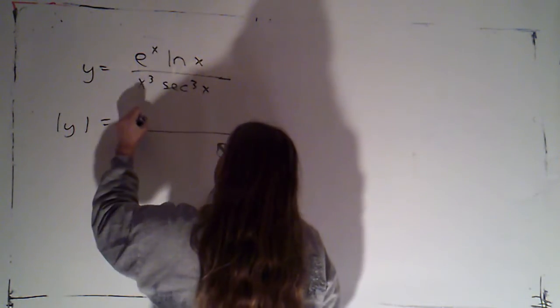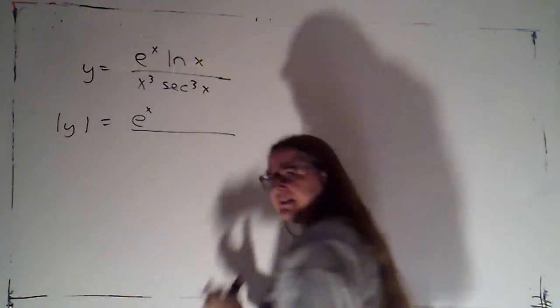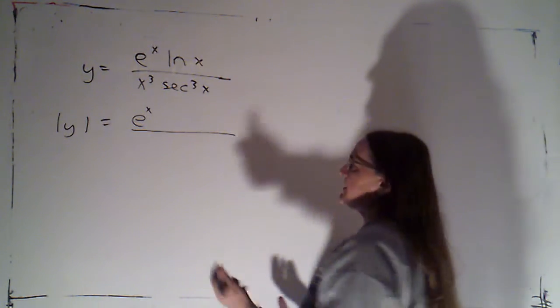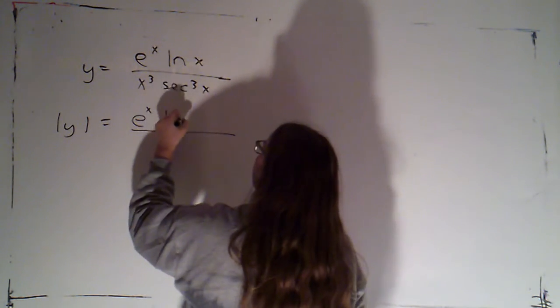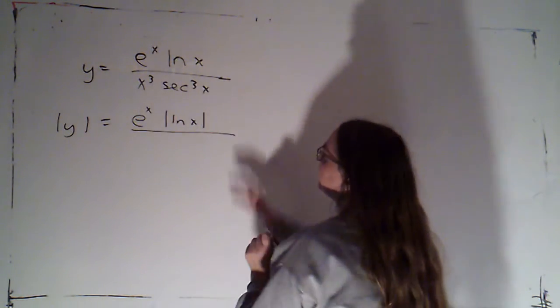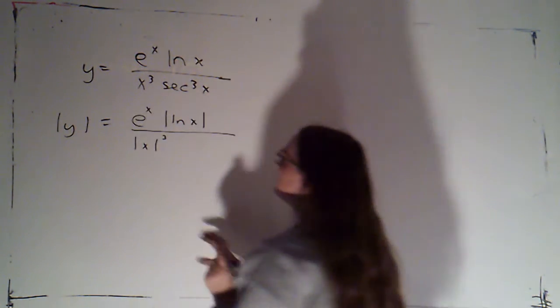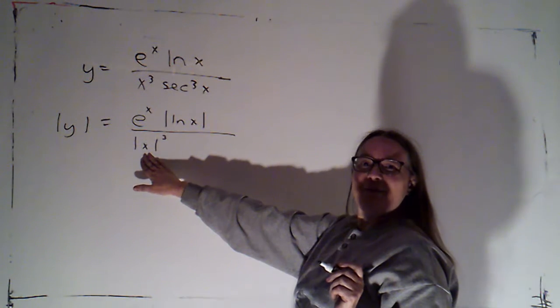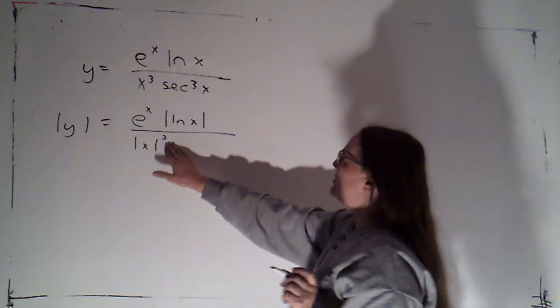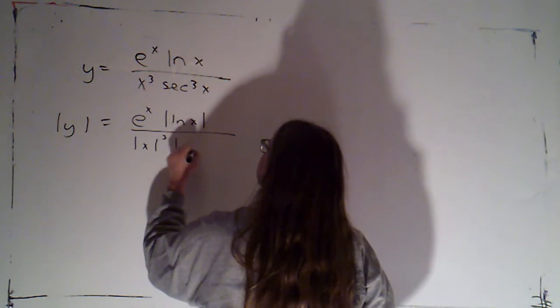Now not only is e to the x never negative, but its base e is always positive as well. So I don't need an absolute value there, but I'll need an absolute value here. For the absolute value of x cubed, I can apply the absolute value to the base and then cube it. Same thing for secant cubed.